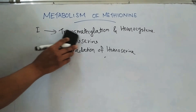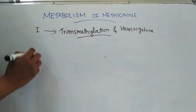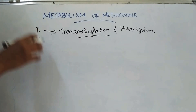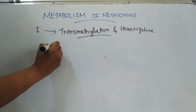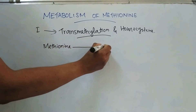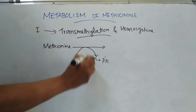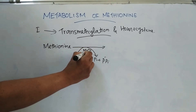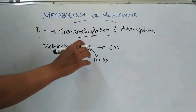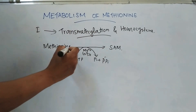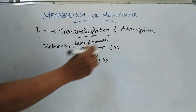Coming to the first stage — transmethylation and conversion to homocysteine — methionine condenses with ATP and forms S-adenosylmethionine, which is the active methionine. It releases Pi plus PPi, requires Mg²⁺ and reduced glutathione (GSH), and forms S-adenosylmethionine by the enzyme methionine-adenosyltransferase.